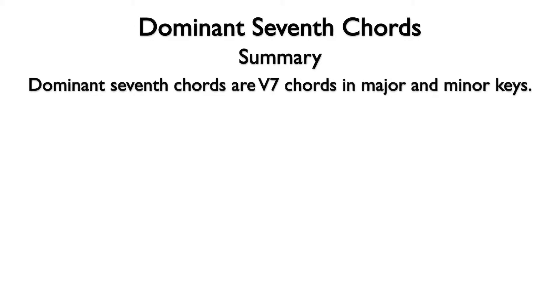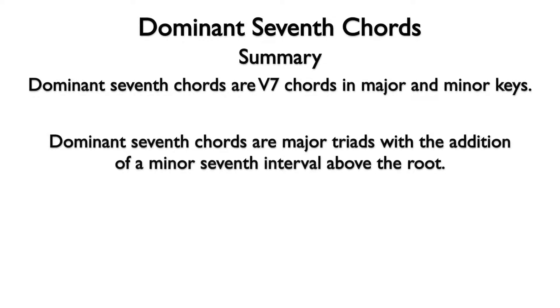Let's summarize. Dominant seventh chords are five seven chords in major and minor keys. Dominant seventh chords are major triads with the addition of a minor seventh interval above the root.